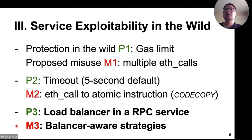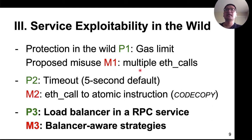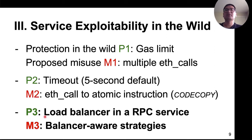In practice, real-world RPC services may have adopted some protections. For example, they may configure a gas limit to limit the amount of computation a single eth_call can use, and set a timeout to limit the execution time of a single eth_call. In the paper, we propose different strategies to work around these protections. I will mainly focus on the last protection — the load balancer — and our attack strategies against it.